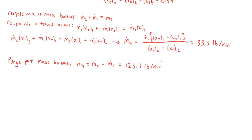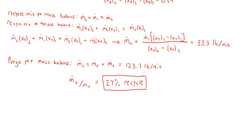You'll find that M.4 is 123.3 pounds per minute. If you divide M.6 by M.4, you'll find that 27% of the mass leaving the top product of column 1 is being recycled back to the feedstock — and that's our final answer. I hope you learned something from this video and that it helped you understand how to solve material balance problems.